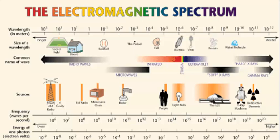This is the diagram of the entire electromagnetic spectrum, which includes all the wavelengths that we encounter. The common waves that we normally use include the radio waves.